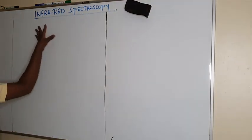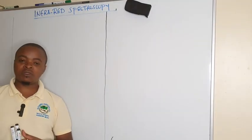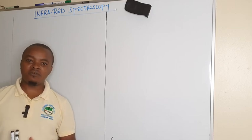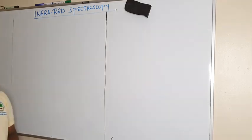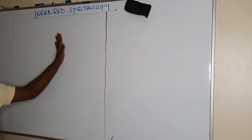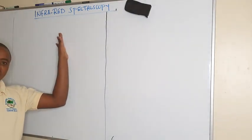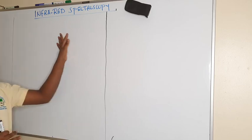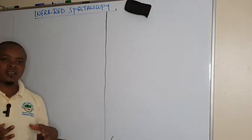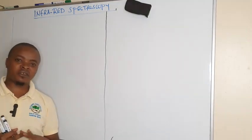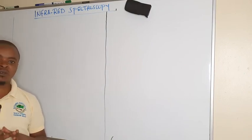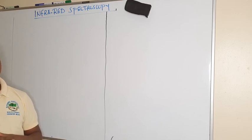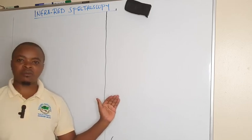We have already completed the introduction to spectroscopy. We have looked at UV visible spectroscopy. So in this session, we are going to zero in on infrared spectroscopy. Under infrared, we are going to see the wavelength, we are going to see the principle, how the instrumentation works, and then we shall conclude with the interpretation.